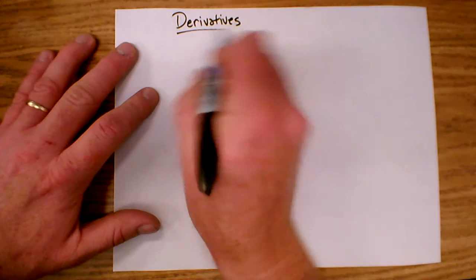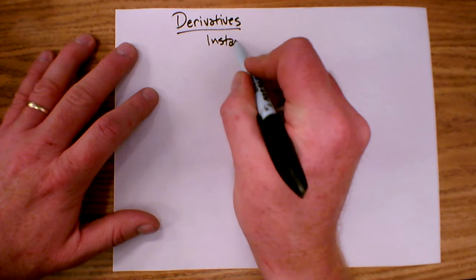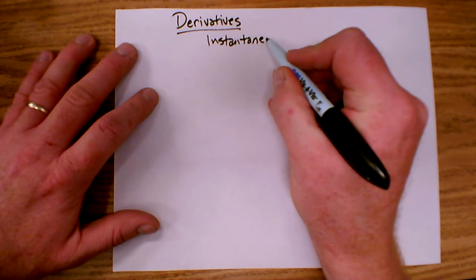Today we're going to talk about derivatives. Derivative is a fancy calculus word that means the instantaneous slope, or the slope at a particular instant of time.